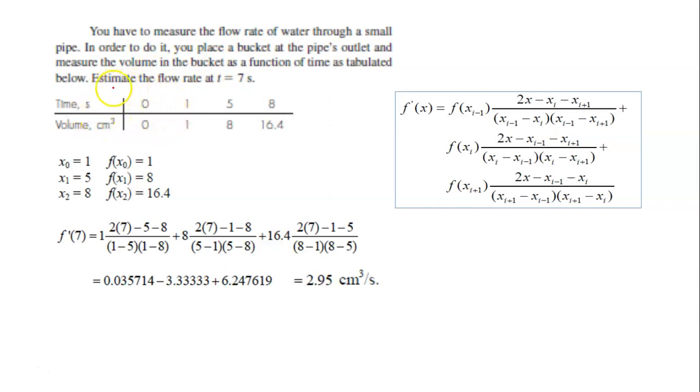So estimate, the question is, estimate the flow rate at t equals 7 seconds. So given here, the volume at 0 second, 1 second, 5 second, 8 second. So they ask you to estimate the flow rate at 7 second.